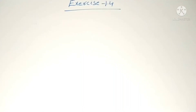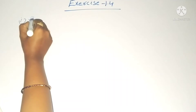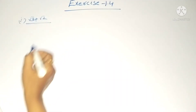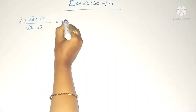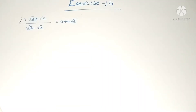Hello students, welcome to my channel. Now we will see our 10th problem in Exercise 1.4. If a and b are rational numbers, find the value of a and b in each of the following equations. Two problems are given. First one: (√3 + √2) / (√3 - √2) = a + b√6. We want to find out the values of a and b.